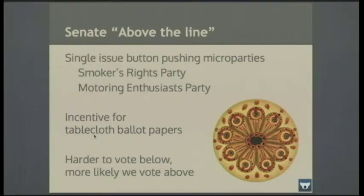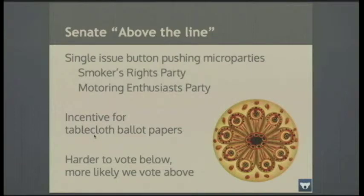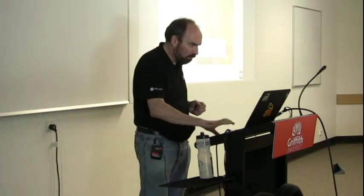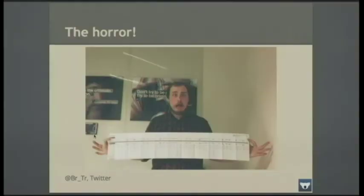Similarly in the Senate we've got single issue, button-pushing microparties. Our system creates an incentive for tablecloth ballot papers — if it's too big and confusing, more people say it's all too hard and vote above the line. The vast majority of Australian voters do vote above the line, handing over their preference choices to a political party. That's a genuine ballot paper somebody put on Twitter — and it was like this across Australia in the recent election.